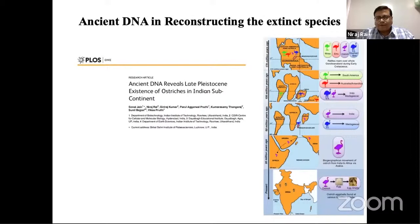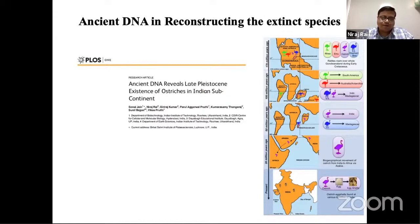In another study, we extracted DNA from an ostrich eggshell that was 25,000 years old. We could not retrieve enough DNA, but we used cloning — from all the extracts, we cloned and sequenced different clones. We were able to retrieve 45 base pairs of ostrich DNA, and confirmed that India once had ostriches, which got extinct about 20,000 years ago.